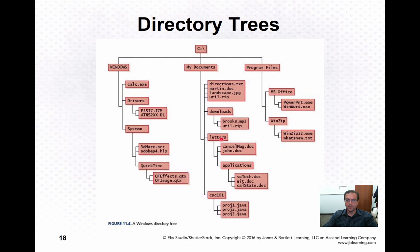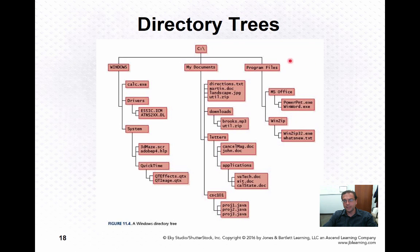Under My Documents, you might have a letters folder with files like cancelmag.doc or john.doc, and an applications folder with files like vatech.doc, mit.doc, and calstate.doc. This is an example of a directory tree, presented to show how the child relationships are structured within the hierarchy.